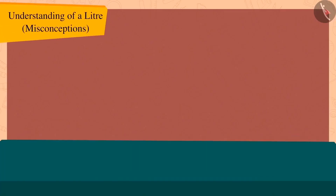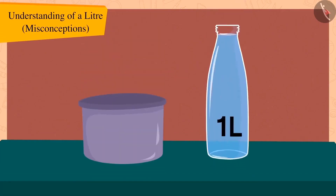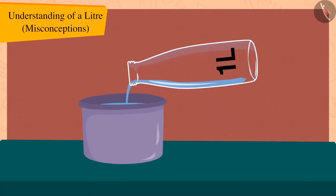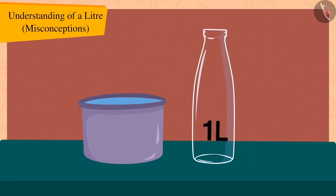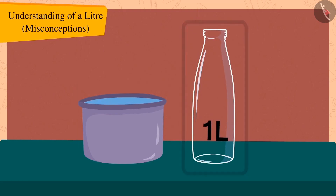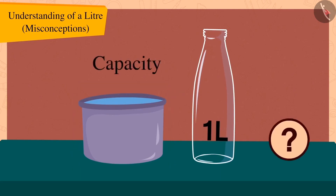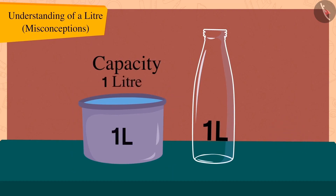Come, let's try it out using more utensils. If we fill this pot with water from this one litre bottle, we will find that the pot is completely filled with this one litre bottle and the bottle is also empty. So, how much is the capacity of this pot? That's correct — one litre.